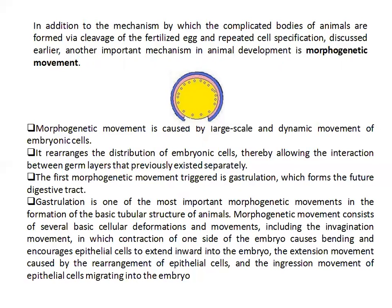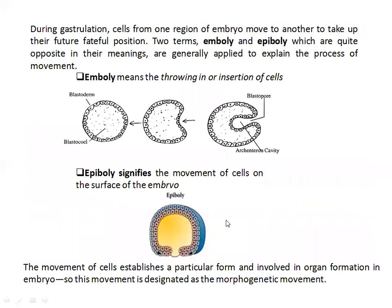There are many structures formed from these layers: brain, eye, heart, kidney, liver, and lungs. The cells become differentiated and move in different ways. There are morphogenetic movements and various patterns of morphogenetic movements.